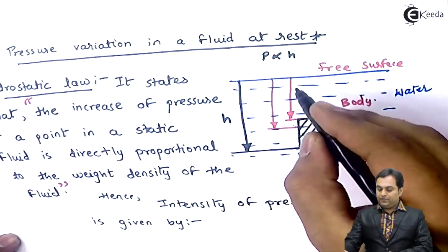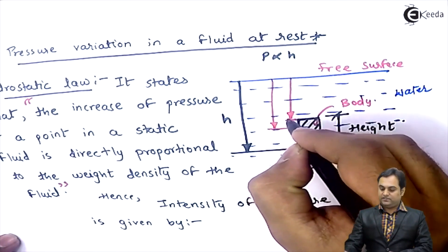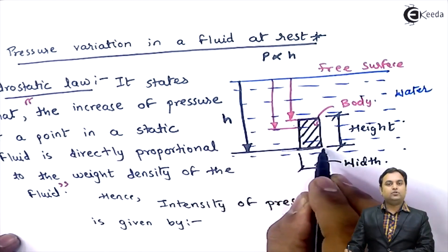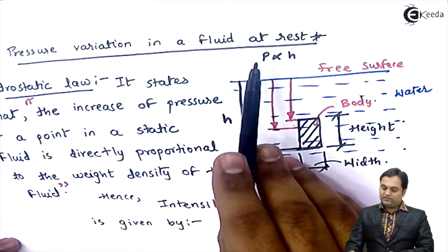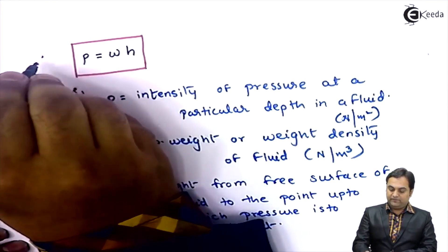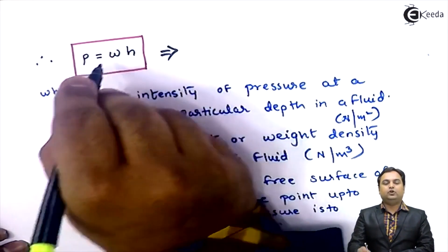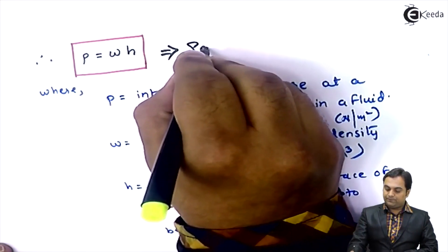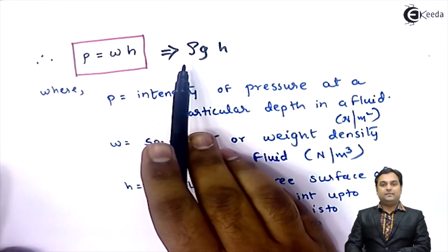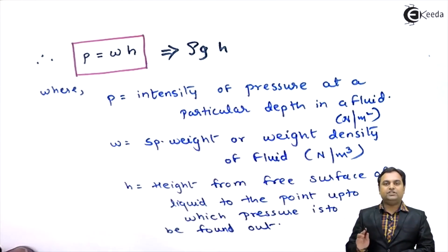If we look at the pressure acting at the top of the body, the pressure intensity will be less. As we increase h and reach the maximum h value at the bottom, the pressure will be maximum. The formula can also be written as P = ρgh, where ρ is the mass density and g is the acceleration due to gravity. By changing the value of h, we get different values of pressure.